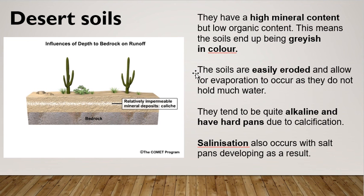Desert soils are easily eroded because they are so weak. Think about sand — sand can easily be moved, whereas soil in your back garden is much harder to dig up. The soils in the desert are easily eroded, and this allows for evaporation to occur as they do not hold much water.